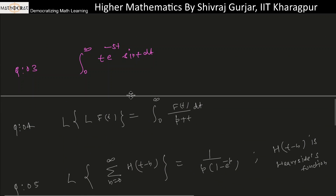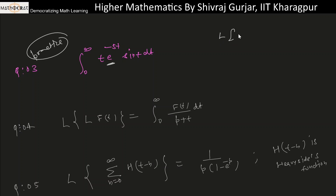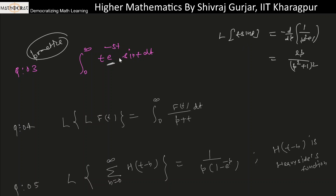This next one I leave as a practice problem. For the integral involving t·sin(t), we use the result that the Laplace of t·sin(t) equals minus d/dp of the Laplace of sin(t), giving 2p/(p²+1)². This is the Laplace of t·sin(t). Then in the expression e^(-pt), put p = 5. That will give you the answer.